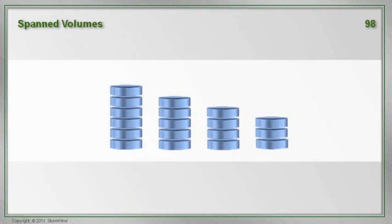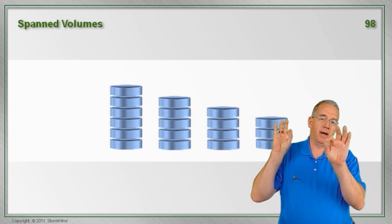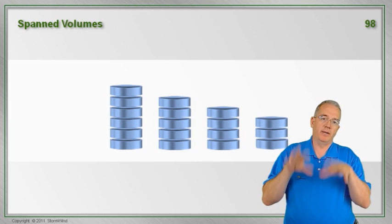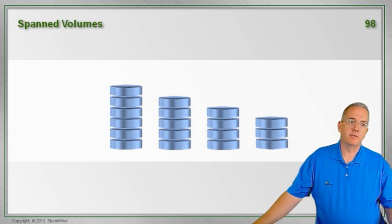So let's go into a spanned volume. A spanned volume, it's like one of those water features. You ever seen those where they have a pot? And in this pot, it's got a little spout. So when this pot fills up, it flows over to the next pot. When that pot fills up, it flows over the next pot, so on and so on. And that's what a span volume does.